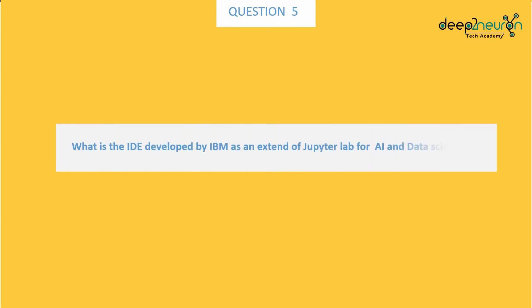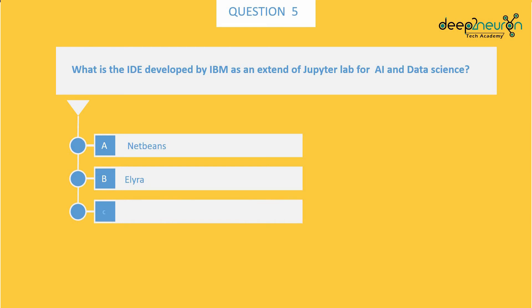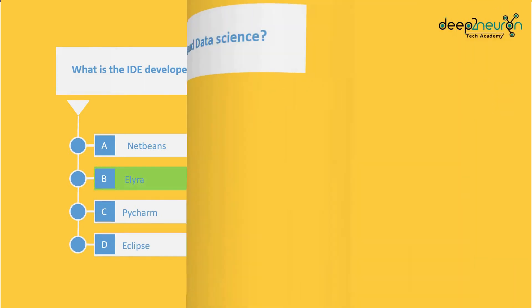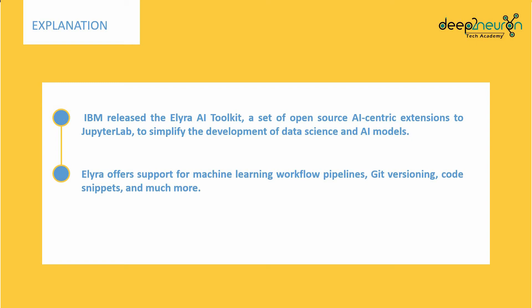Question number 5: What is the IDE developed by IBM as an extension of JupyterLab for AI and data science? Option A: NetBeans. Option B: Elyra. Option C: PyCharm. Option D: Eclipse. The right answer is Option B, Elyra. IBM released the Elyra AI Toolkit, a set of open-source AI-centric extensions to JupyterLab to simplify development of data science and AI models. Elyra offers support for machine learning workflow pipelines, Git versioning, code snippets, and much more.